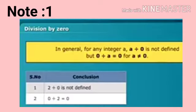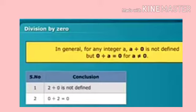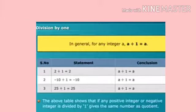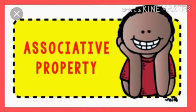As a note: for any integer, say 2, dividing 2 by 0 is meaningless — it is not defined. But 0 divided by 2 is 0; zero divided by any non-zero number is considered 0. Division by 1: for any integer, say 2, 2 divided by 1 is 2, and minus 2 divided by 1 is minus 2. If any positive or negative integer is divided by 1, it gives the same number as the quotient.